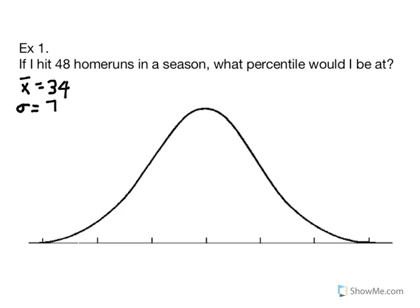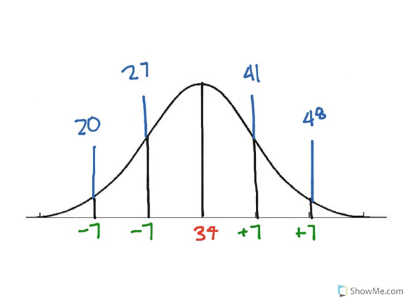Example 1. If I hit 48 home runs in a season, what percentile would I be at? The x mean value is 34, and the standard deviation is 7. So first we draw our normal curve.